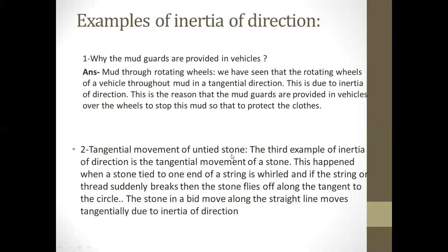Another example of inertia of direction is the tangential movement of an untied stone. When a stone tied to one end of a string is whirled and the string suddenly breaks, the stone flies off along the tangent to the circle. The stone moves along a straight line tangentially due to inertia of direction. If you tie a stone with a thread and suddenly release it, the stone will fly off tangentially — perpendicular to the circle — due to inertia of direction.